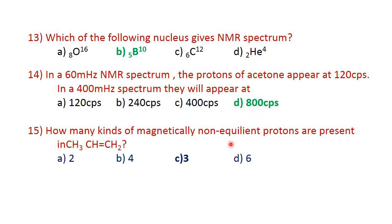How many kinds of chemically equivalent protons are present in CH3-CH-CH2? There are three types of protons: CH3 protons, CH protons, and CH2 protons. Therefore three signals are possible for this compound.